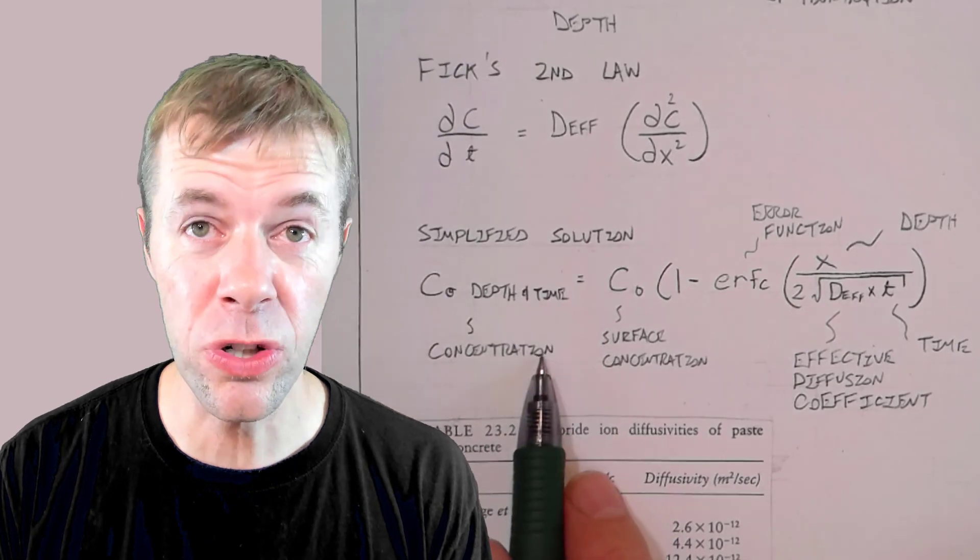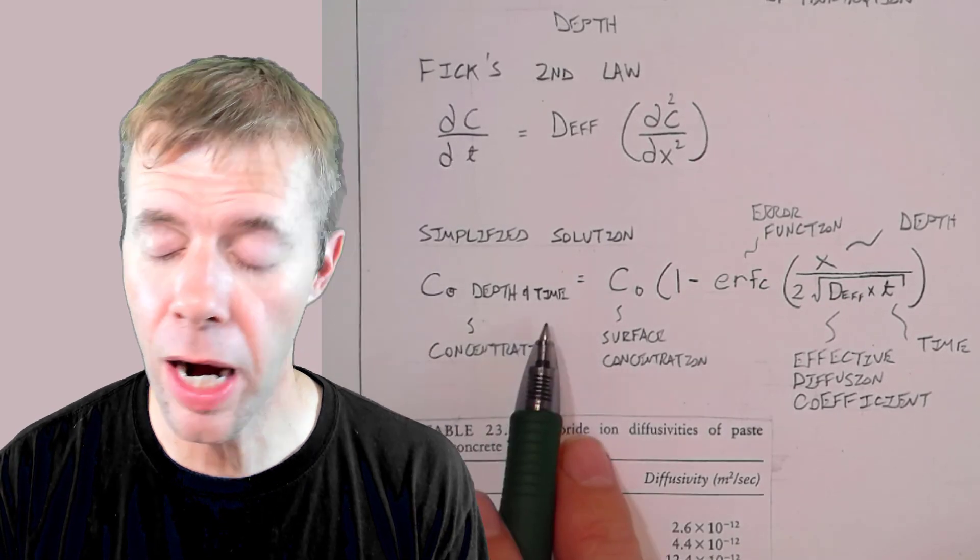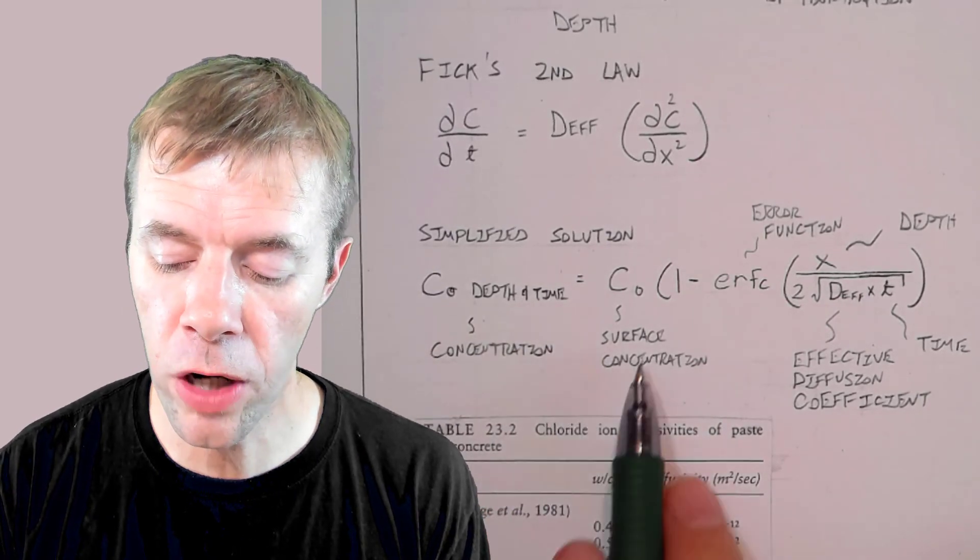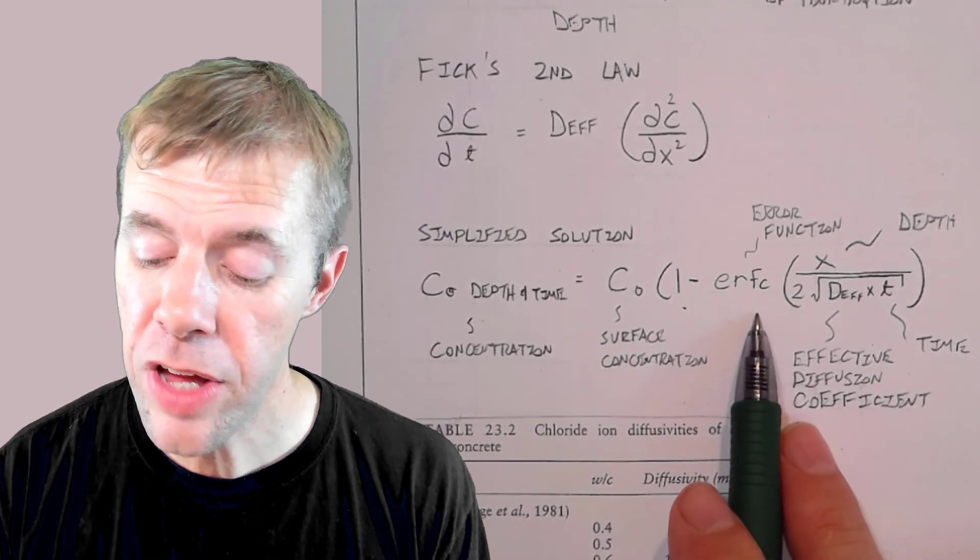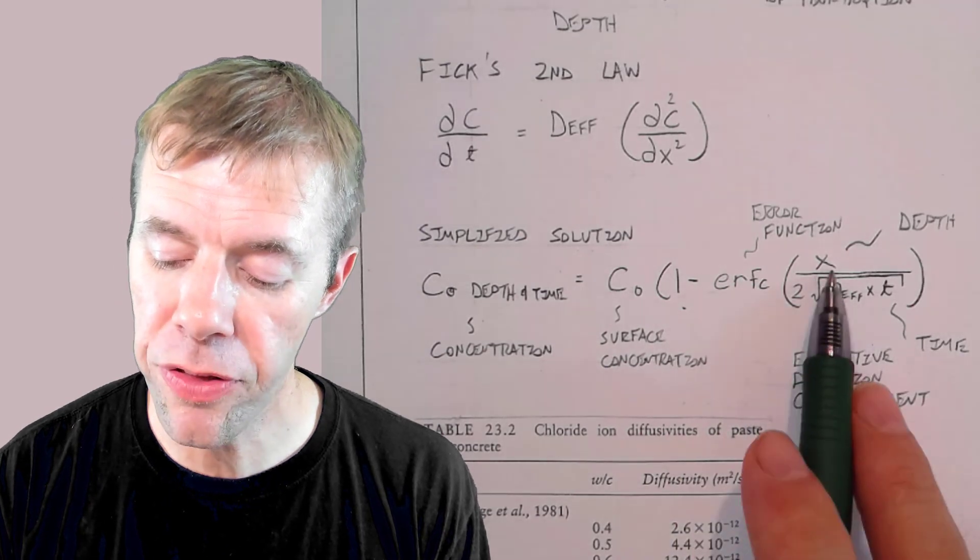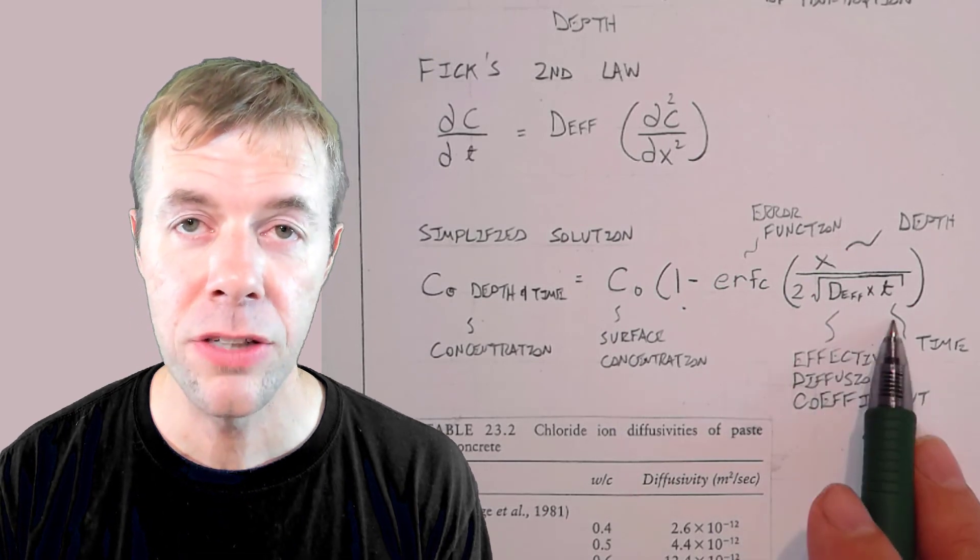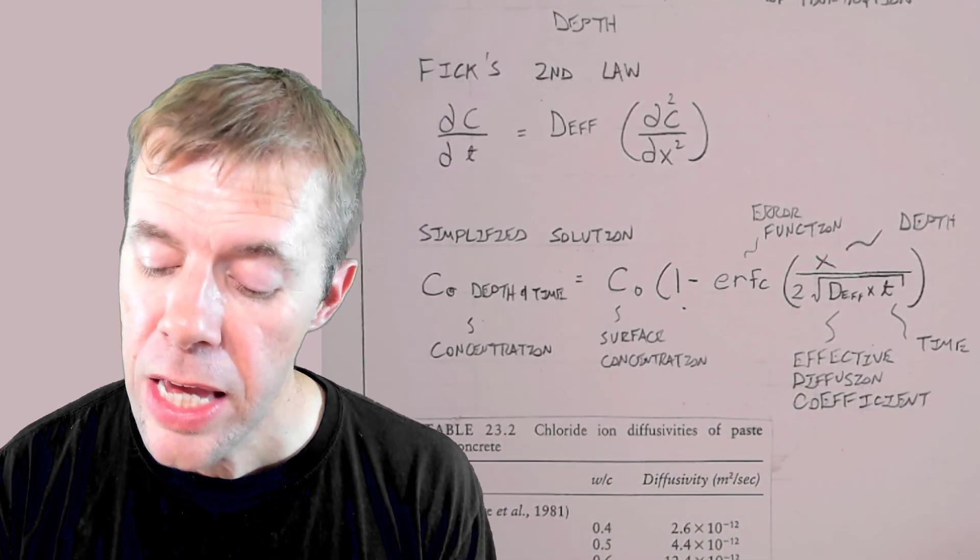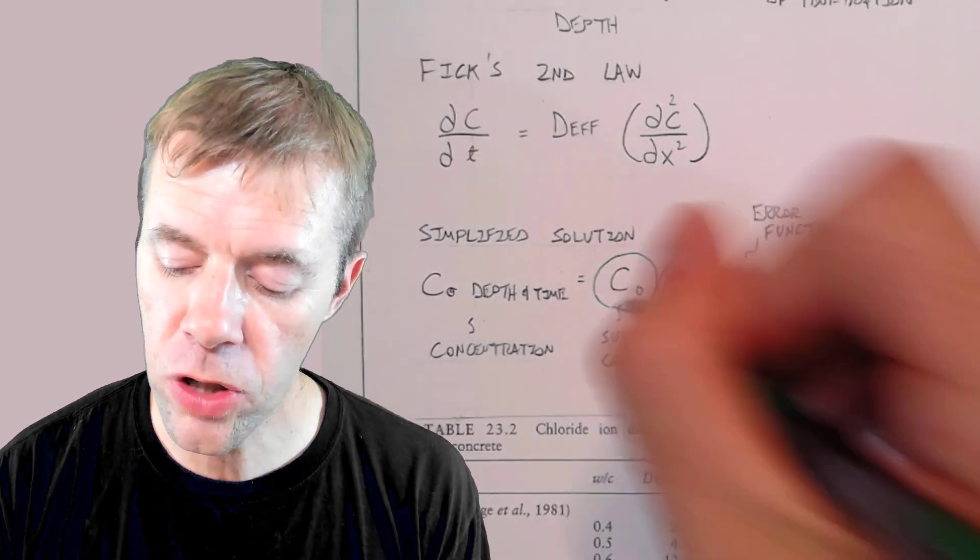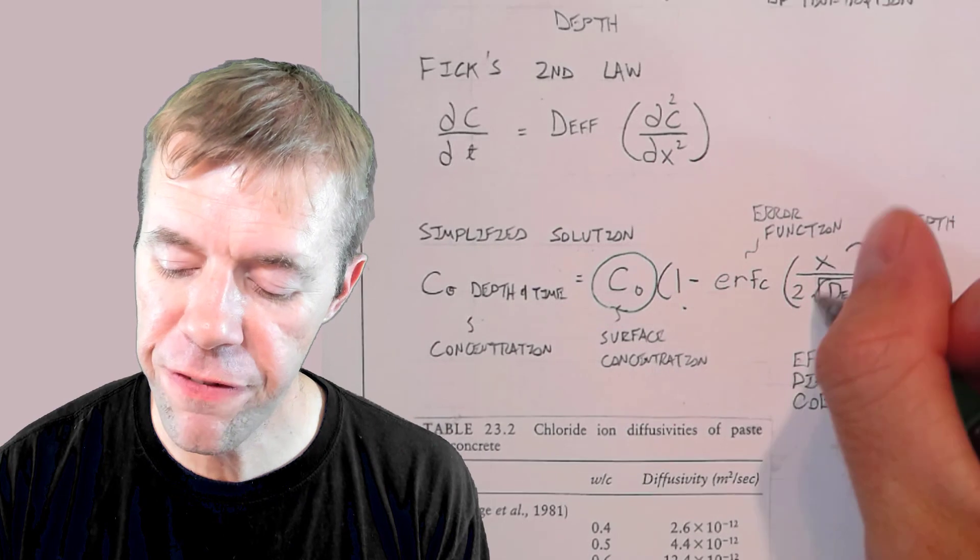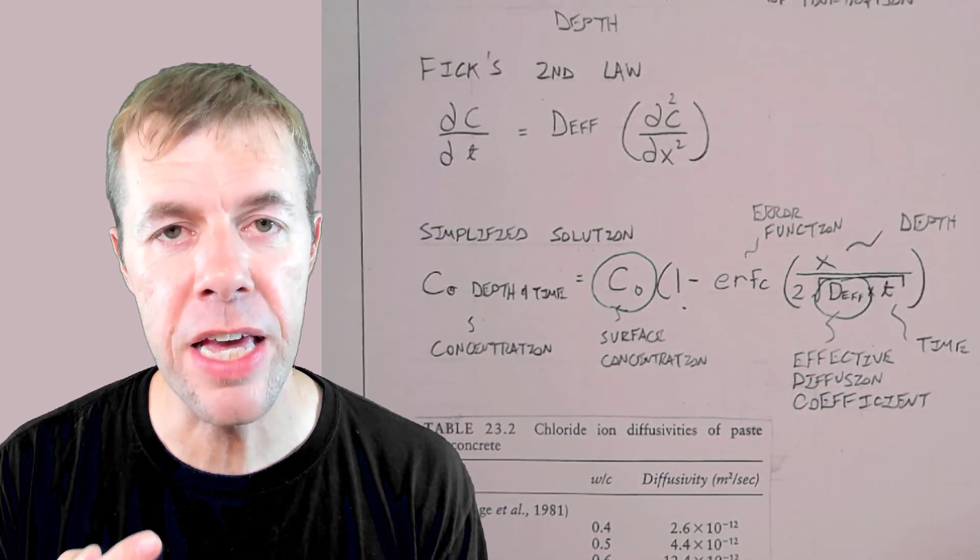The simplified solution to that differential equation is this. The concentration at the depth at a given time is equal to the surface concentration times one minus the error function. Yeah, it's a weird math term. The error function times the depth divided by two times the square root of the effective diffusion coefficient times time. Now the cool thing about this is that everything in this is a constant except for the surface concentration and the effective diffusion coefficient. That's it. Those are the only two terms you have to fit from these equations.